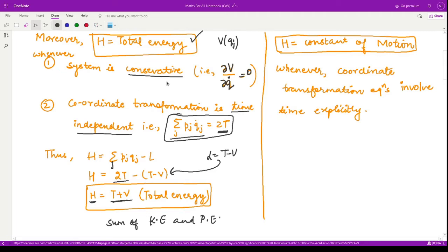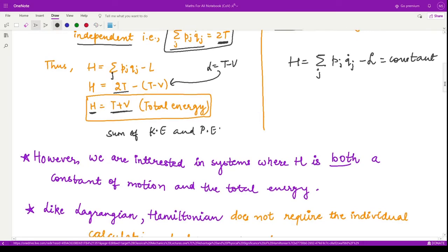Provided we have the conditions that the system is conservative and the coordinate transformation is time independent. In another case, this H represents the constant of motion. H equals summation varying over j pj qj dot minus L is constant when the coordinate transformation involves time explicitly.